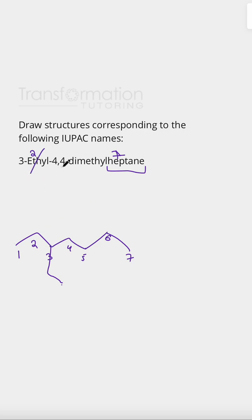Next, 4,4-dimethyl. That means on carbon 4, I have 2 groups, and they're both methyl groups. I have 2 methyl groups on carbon number 4. 1, 2, and there you have it.